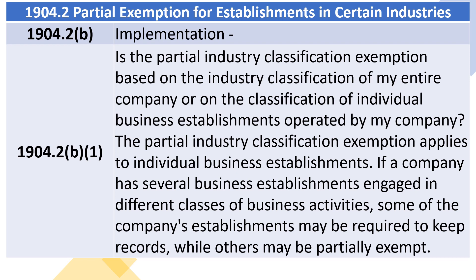The Partial Industry Classification Exemption applies to individual business establishments. If a company has several business establishments engaged in different classes of business activities, some of the company's establishments may be required to keep records, while others may be partially exempt.